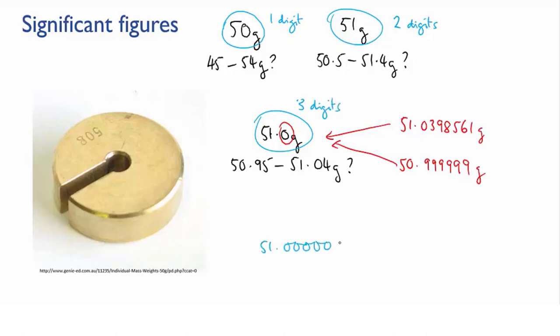Note that if we had absolutely no measurement error, then we could write the mass to an infinite number of decimal places. Exactly 51 grams would be written like that.